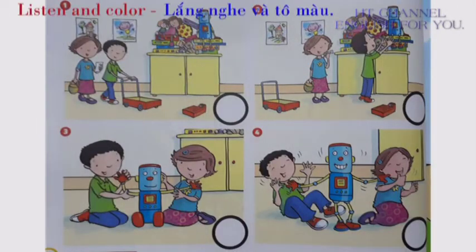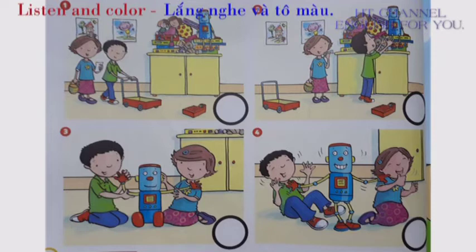Listen and colour. Red. Look! A robot! Blue. What's this? Green. Oh, no! Yellow. It's a toy shop! Wow!